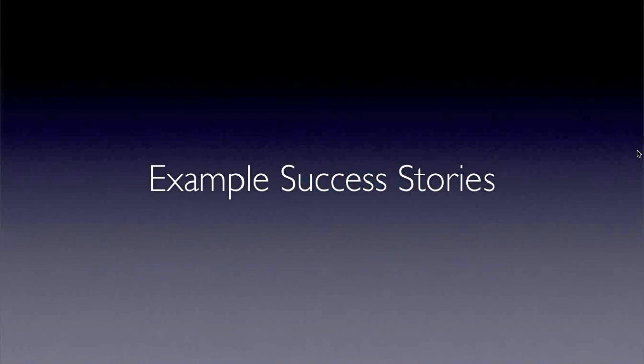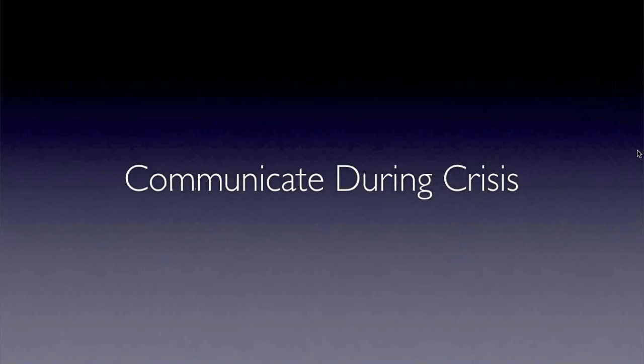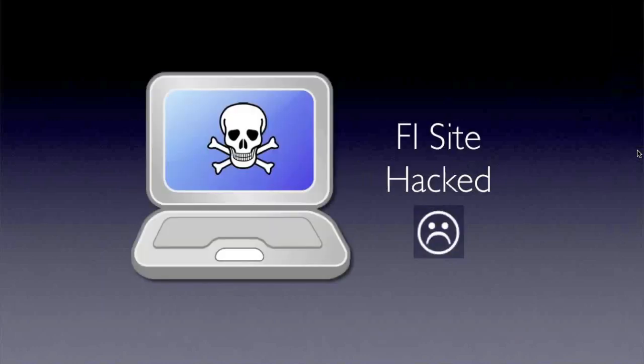To start off, we're going to take a look at a scary situation and how a financial institution was able to communicate during a crisis. This all started with something that would keep a lot of us on the compliance and IT sides awake at night: the financial institution's website was compromised. Back in the day, before social media, we were in a position where it was just sit and wait and hope the situation would be resolved quickly, with minimal losses and customer information unaffected.